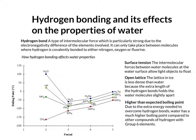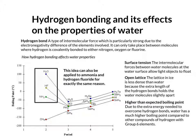The final property affected by hydrogen bonding is the higher than expected boiling point of water. This is because of the extra energy needed to overcome hydrogen bonds. It has a much higher boiling point compared to other compounds of hydrogen with group 6 elements. This idea also applies to other compounds of hydrogen with group 5 and group 7 elements — so hydrogen fluoride has a higher than expected boiling point, and ammonia has a higher than expected boiling point.